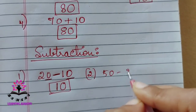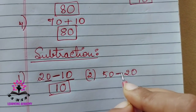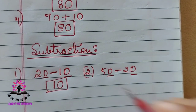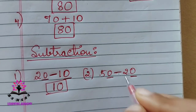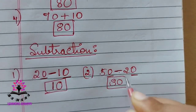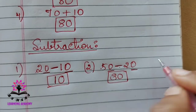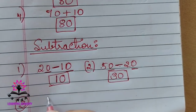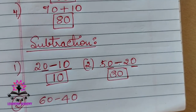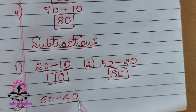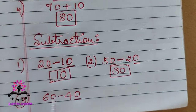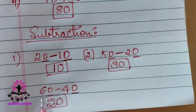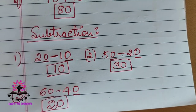One more: 50 minus 20. It is subtraction — see the sign properly. Zero in the unit place for both. Five minus two is three. Zero in the unit place — 30 is the answer. One more problem: 60 minus 40. Zero in the unit place for both. Six minus four is two. Zero in the unit place — it is 20. So 60 minus 40 is 20.